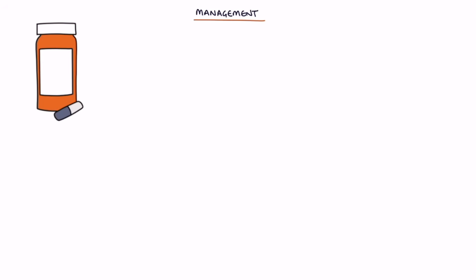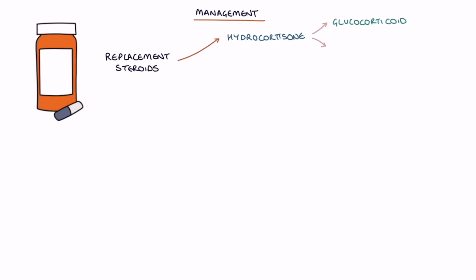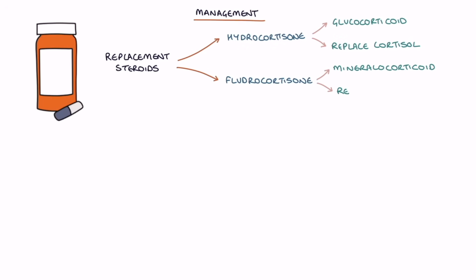Next, let's talk about management. Treatment of adrenal insufficiency is with replacement steroids. Hydrocortisone, a glucocorticoid, is used to replace cortisol. Fludrocortisone, a mineralocorticoid, is used to replace aldosterone if aldosterone is also insufficient. Doses are titrated to the signs, symptoms and electrolytes.